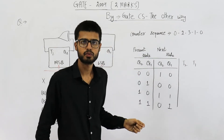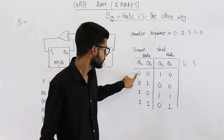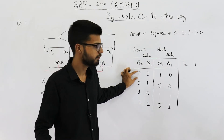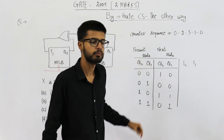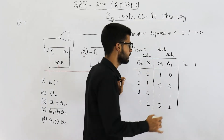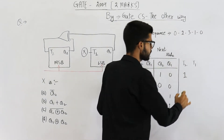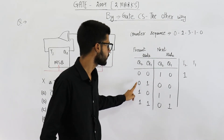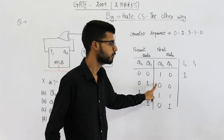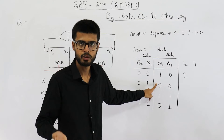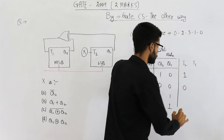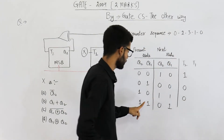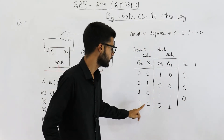From state 0 we want to go to state 2: Q2 is 0 and after the clock Q2 must be 1, so we want to toggle from 0 to 1, meaning T is 1. Then Q2 remains 0 — from 0 we want the next state also to be 0, meaning we don't want to toggle, so T is 0. Here also we don't want to toggle, so this is 0.